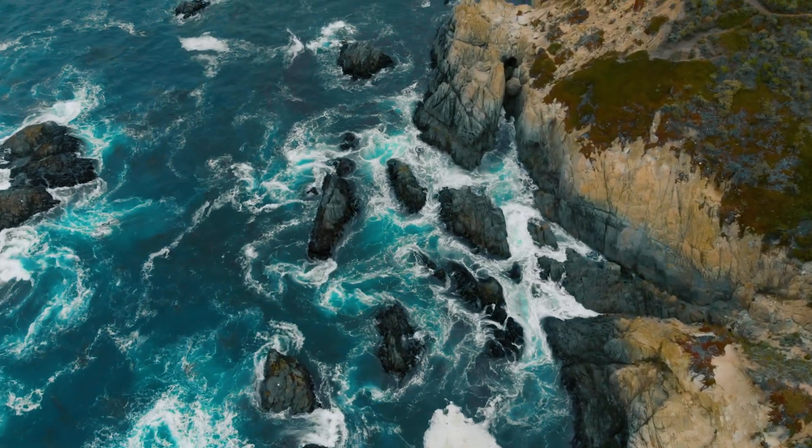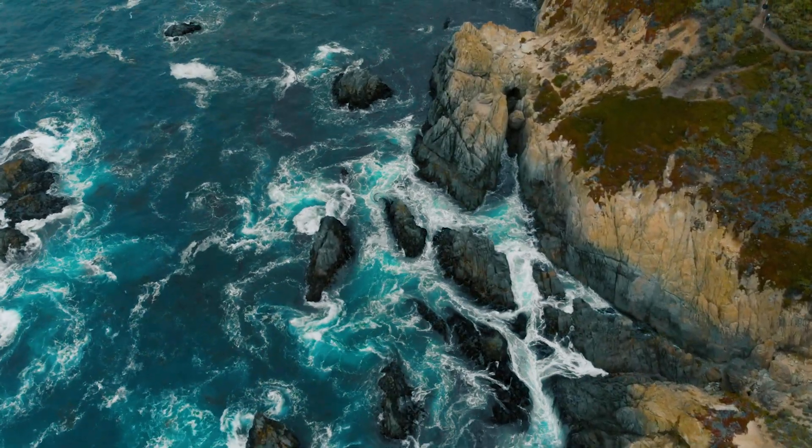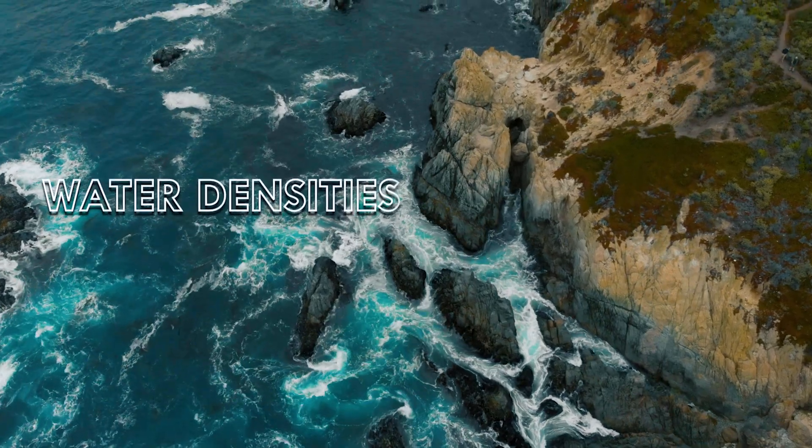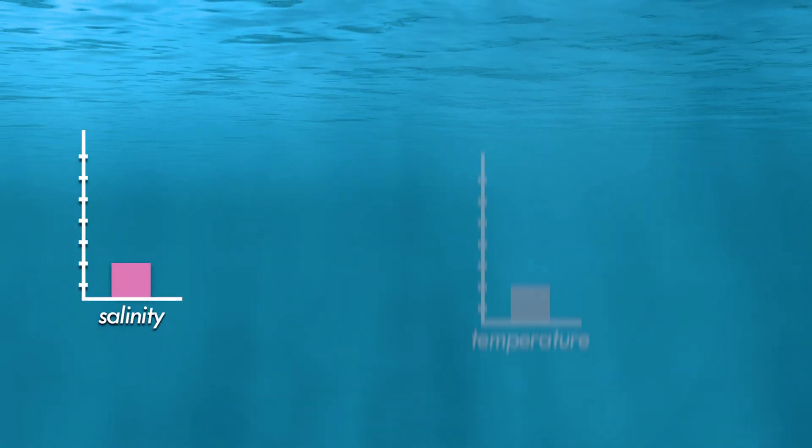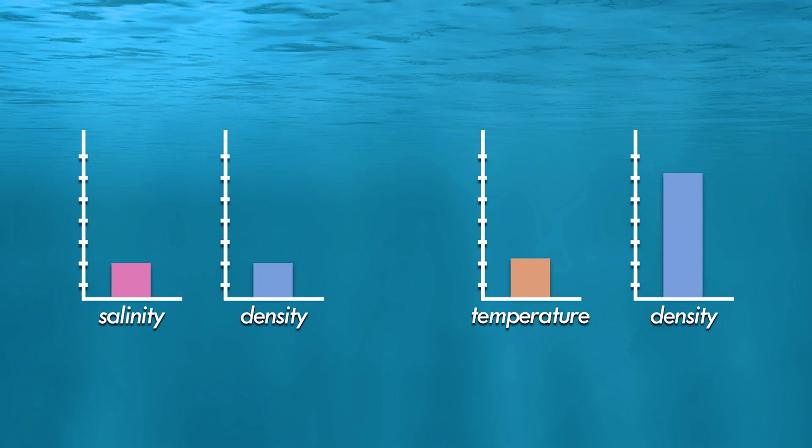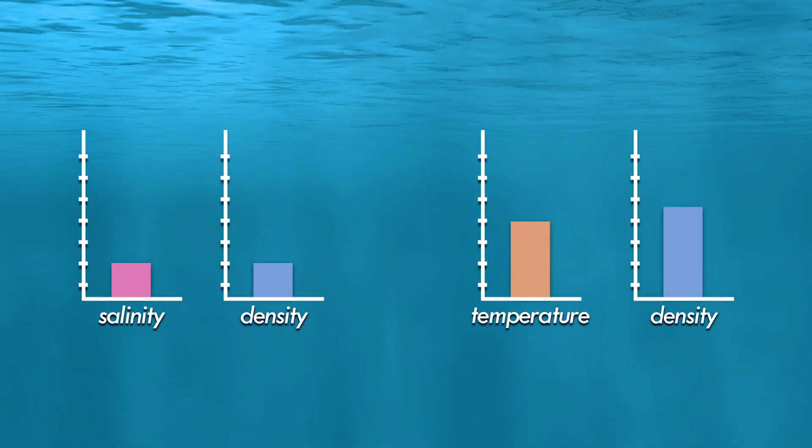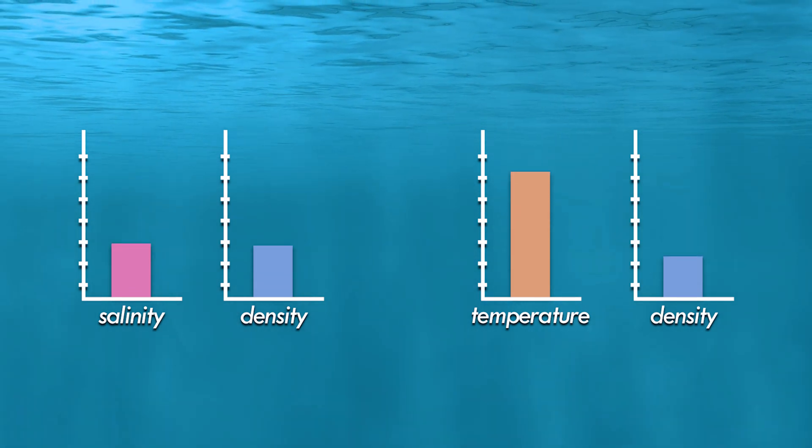The main feature that drives all ocean circulation is a difference in water densities. Factors like salinity and temperature affect the density of water, with cold water being denser than warm and salty water being denser than fresh.